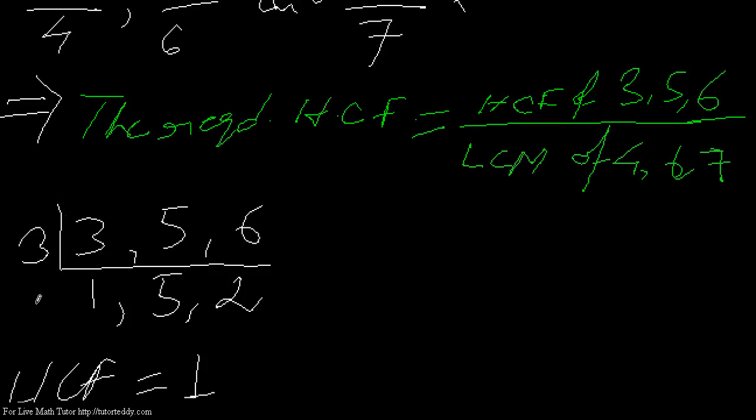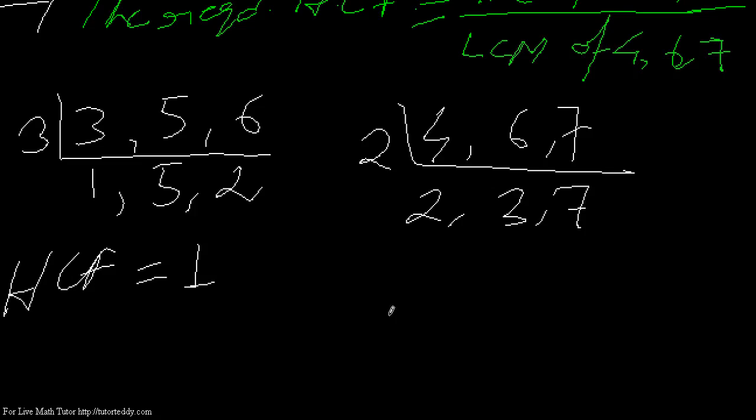Because all three numbers are not divisible by a common factor, only by 1. Now what about the LCM of 4, 6, 7? Let me try with 2. 2×2 is 4, 2×3 is 6, and 7 remains. So my LCM will be